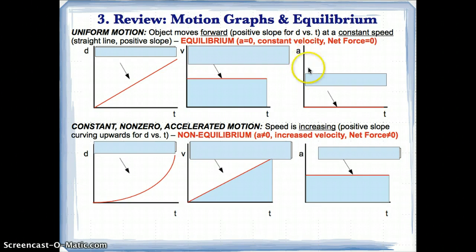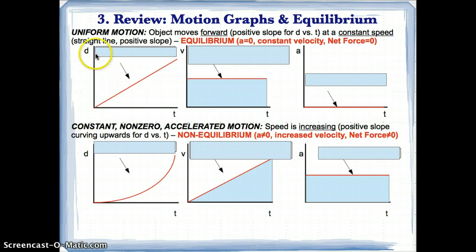Equilibrium is shown by a constant velocity, which is a horizontal line for v versus t, and acceleration equals zero. Therefore, since acceleration is equal to zero, so is net force. Equilibrium is shown by an object moving forward at a constant speed — a straight line and positive slope for d versus t, a flat horizontal line for v versus t, and a equals zero, so net force equals zero.